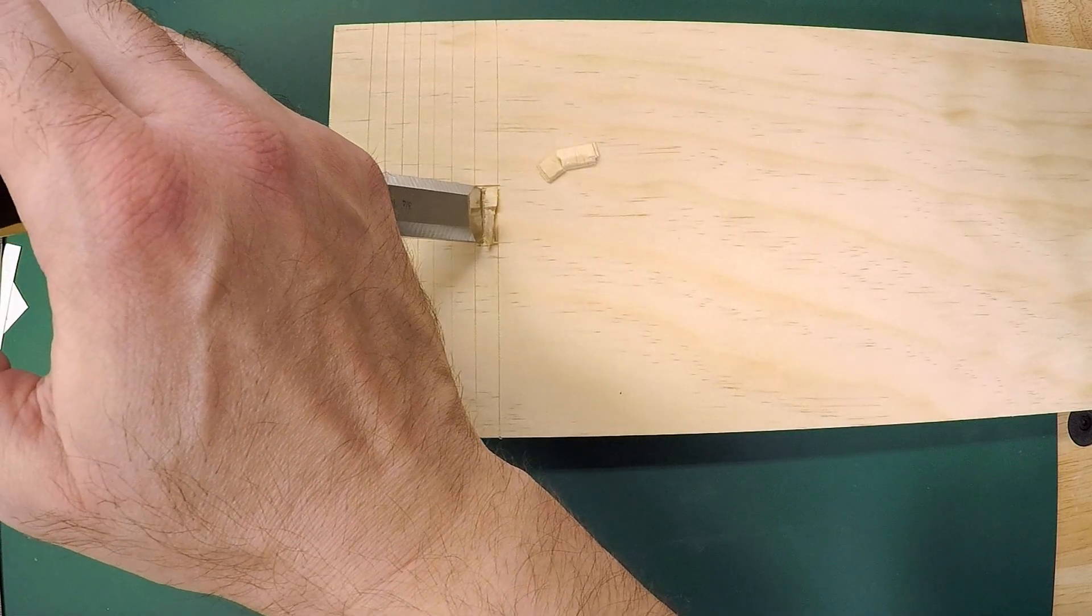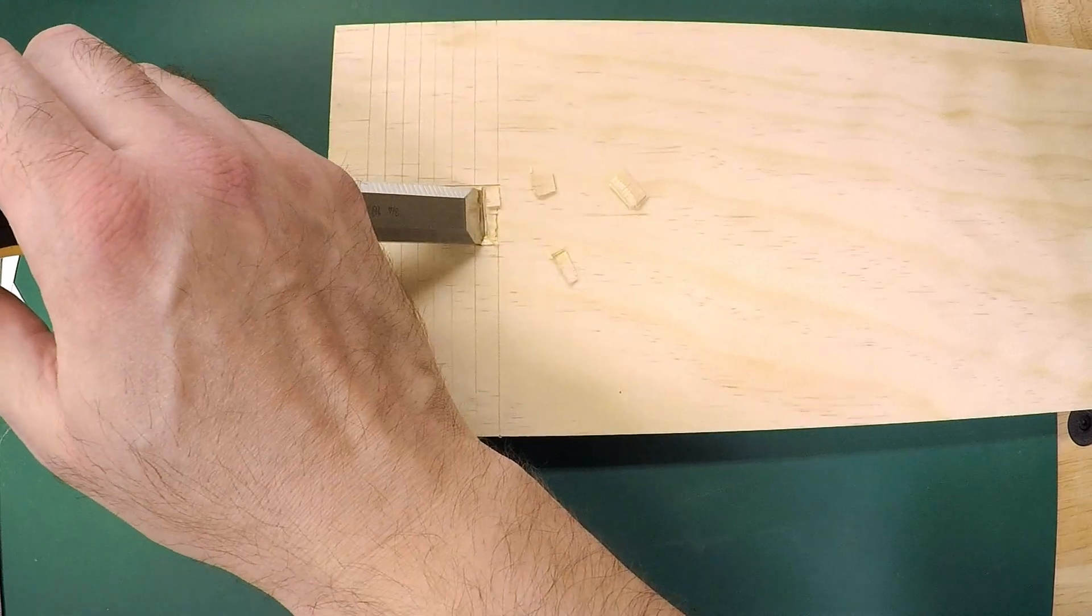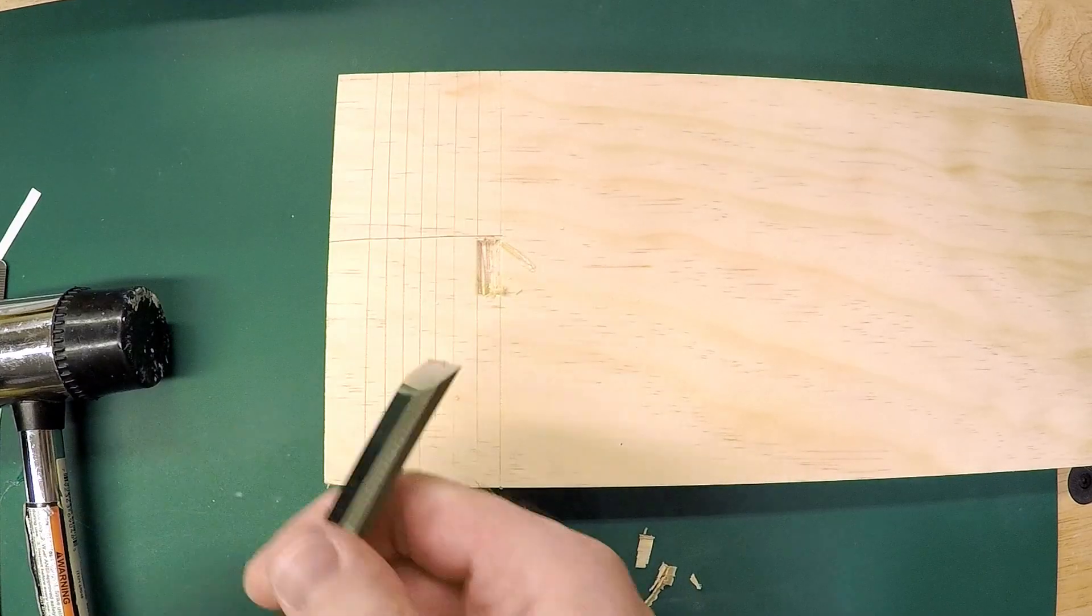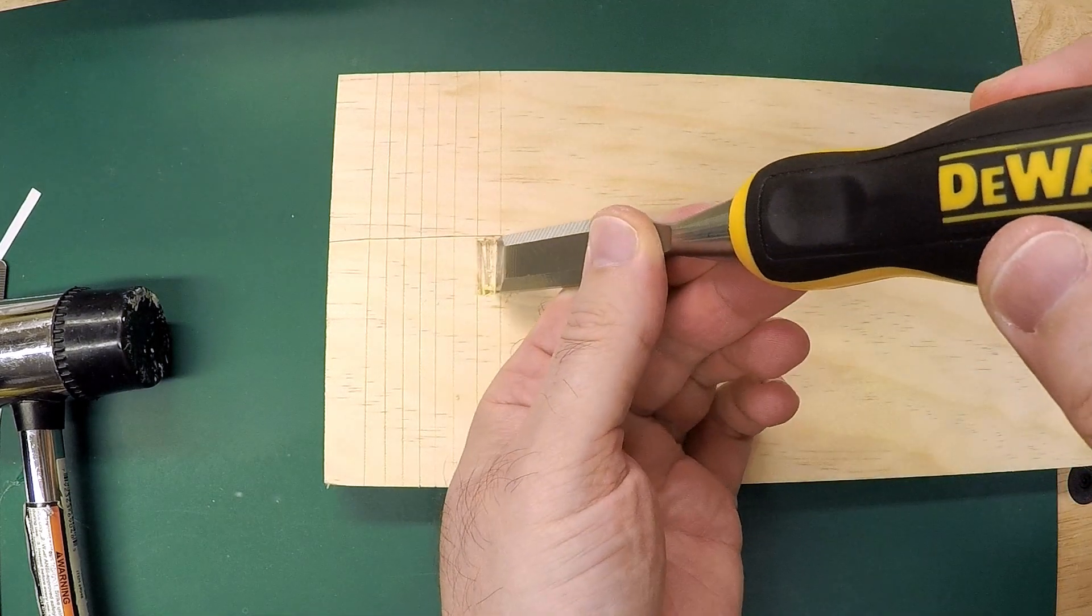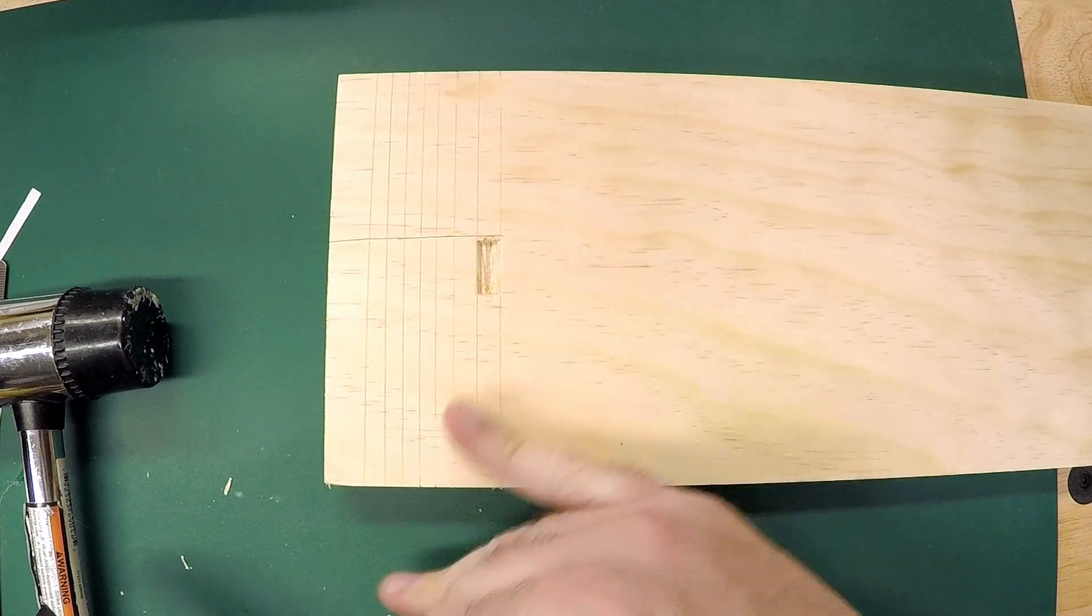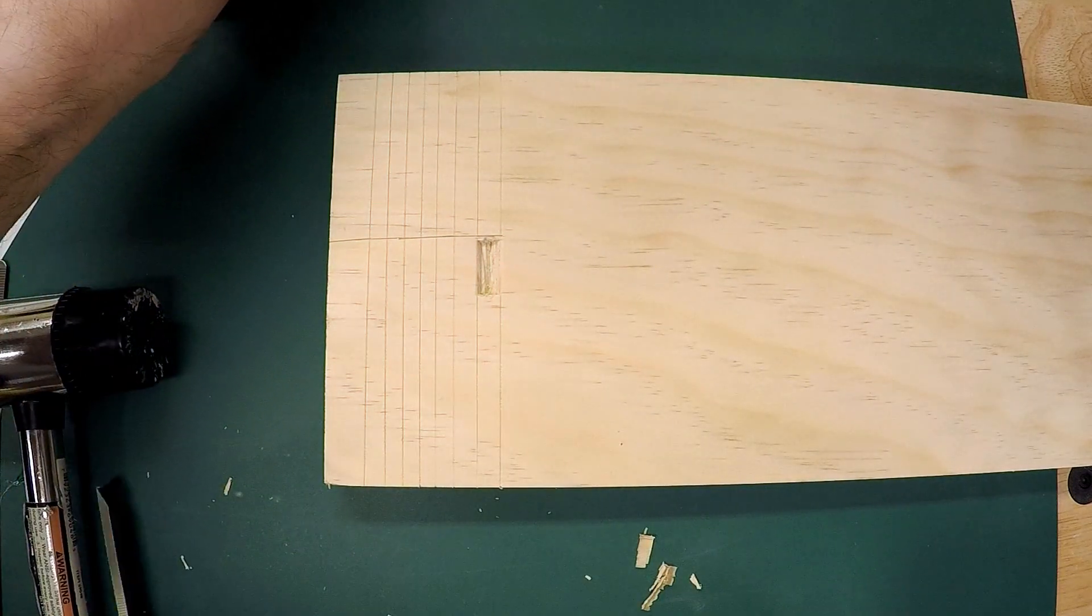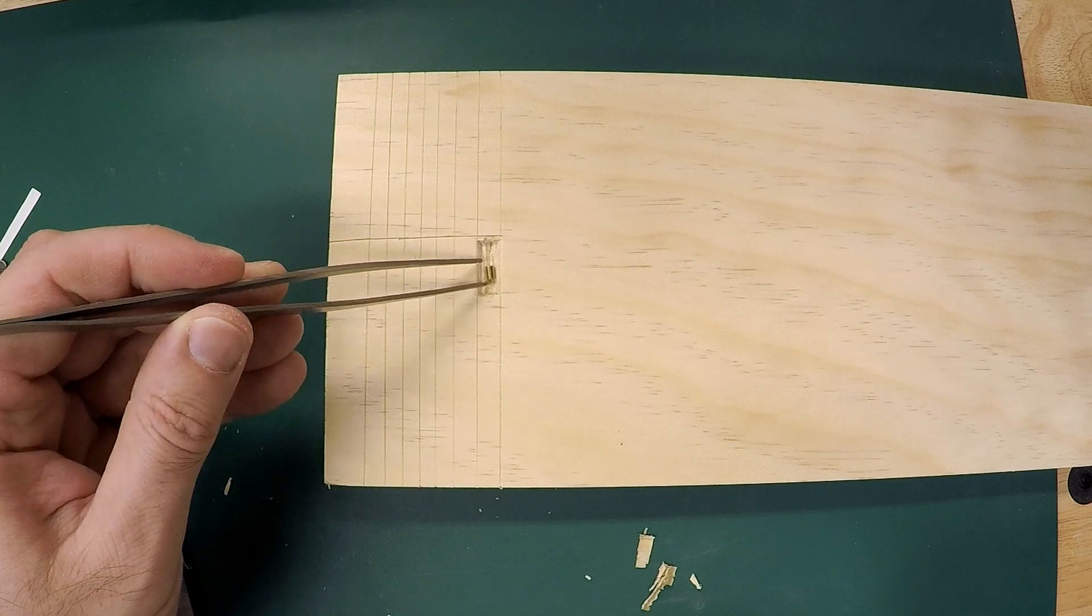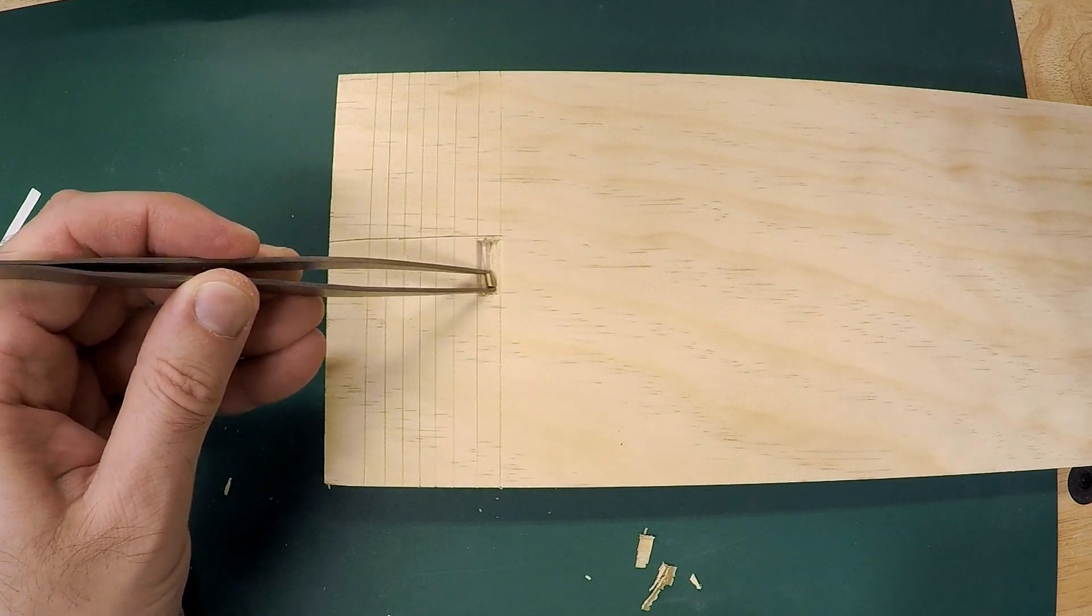And here I've got that first cut done. And I'm just coming down and cleaning it up making it a little bit deeper. A good sharp chisel is really key here. And the technique is a little off because I'm trying to work around a camera arm.